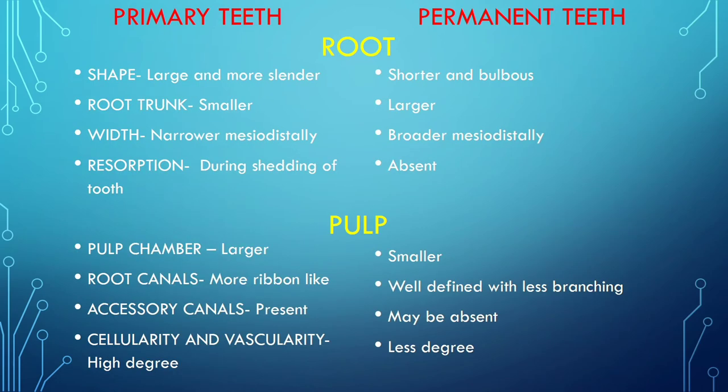Regarding roots: in primary teeth the roots are a little large and more slender, while in permanent they are shorter. The root trunk is smaller in primary and larger in permanent. The root width is narrow mesiodistally in primary and broader in permanent. Root resorption occurs during shedding in primary teeth, while resorption is absent in permanent teeth.